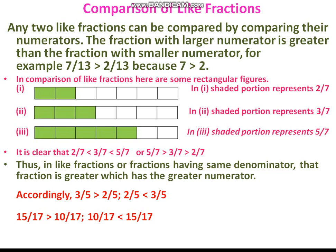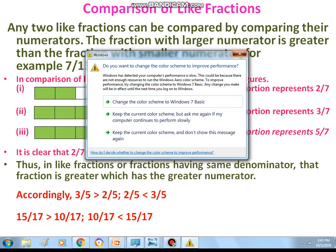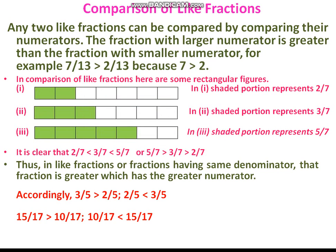Considering another example using rectangular figures: the shaded portions represent 2 by 7, 3 by 7, and 5 by 7. Therefore, 2 by 7 is less than 3 by 7 is less than 5 by 7, or equivalently 5 by 7 is greater than 3 by 7 is greater than 2 by 7. In like fractions, the fraction with the greater numerator is greater. So 3 by 5 is greater than 2 by 5, and 15 by 17 is greater than 10 by 17.